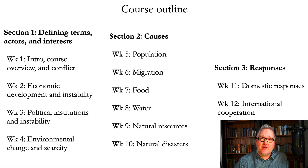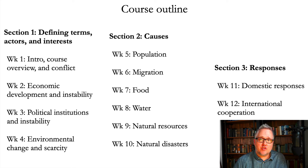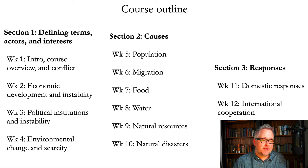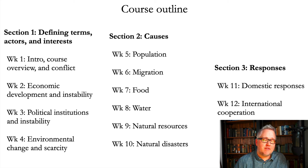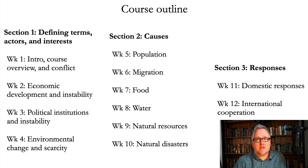The class itself has three main sections. The first section defines our terms, the actors we're going to be looking at, and their interests as they define them themselves. This first week is the intro, focusing on conflict. Second week is on economic development and instability. Third, we turn to political institutions and instability. Week four covers environmental change and scarcity and the effects it might have on political instability. So we're looking at economic, political, and environmental issues in the first part.